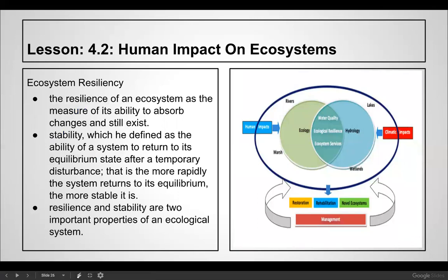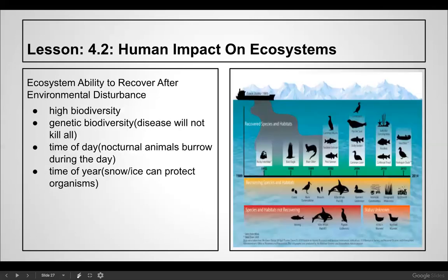The resilience of an ecosystem is a measure of its ability to absorb changes and still exist. Stability is the ability of a system to return to its equilibrium state after a temporary disturbance — for example, how quickly an area affected by an oil spill or a region struck by a hurricane can return to normal. Resilience is also influenced by high biodiversity — the more biodiverse an ecosystem, the more likely it is to recover — genetic diversity, the time of day such as whether nocturnal animals are burrowed, and the time of year.